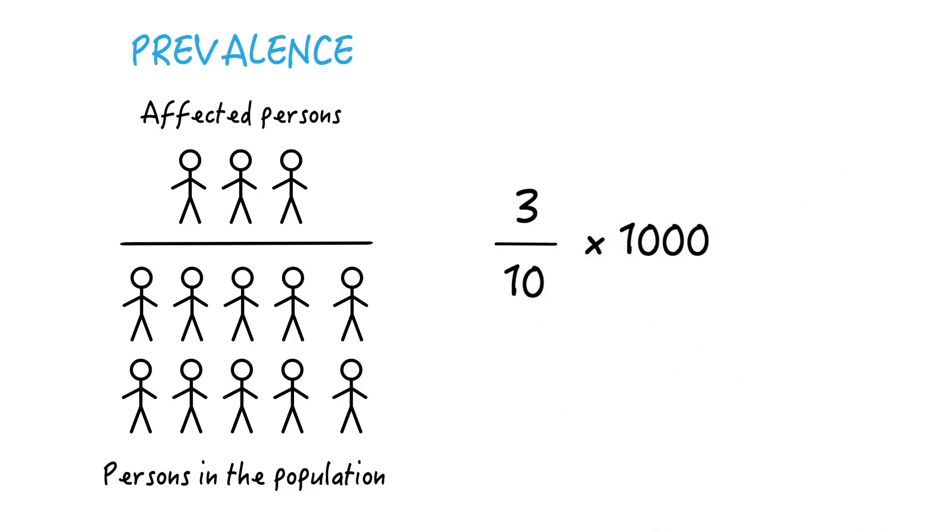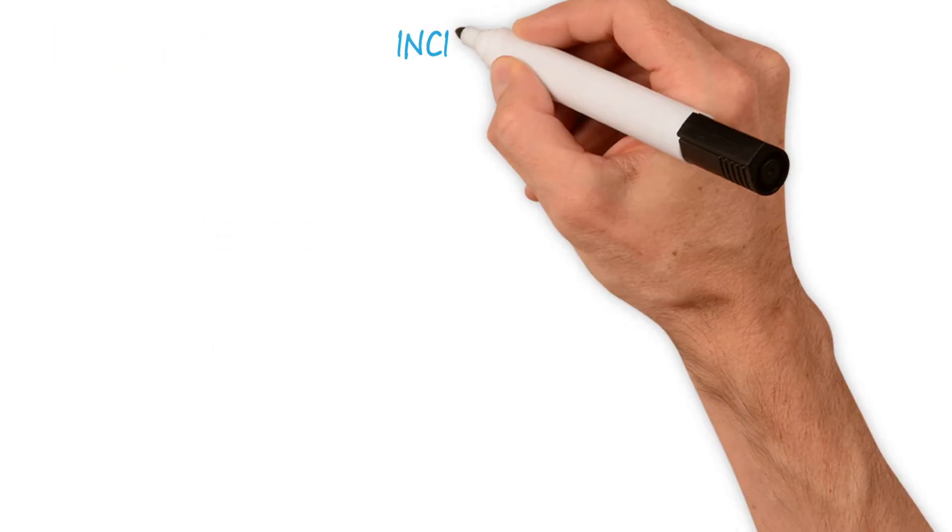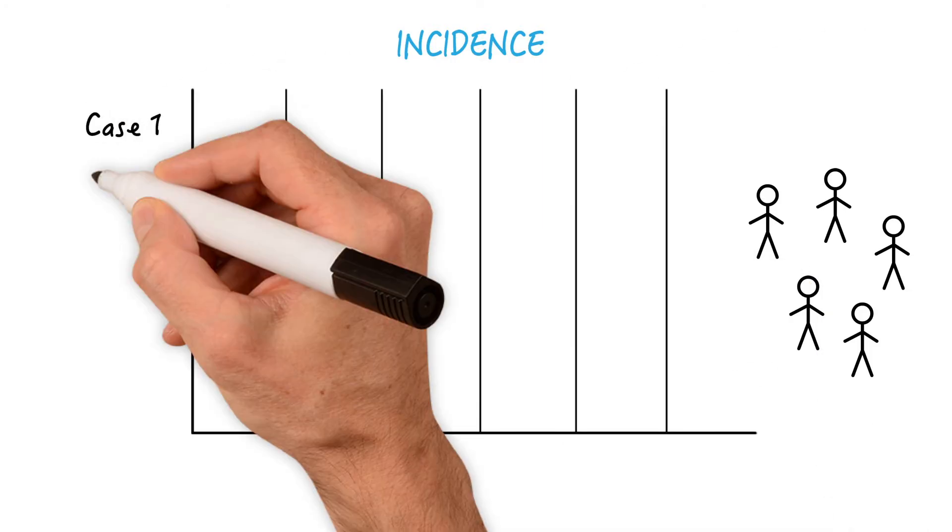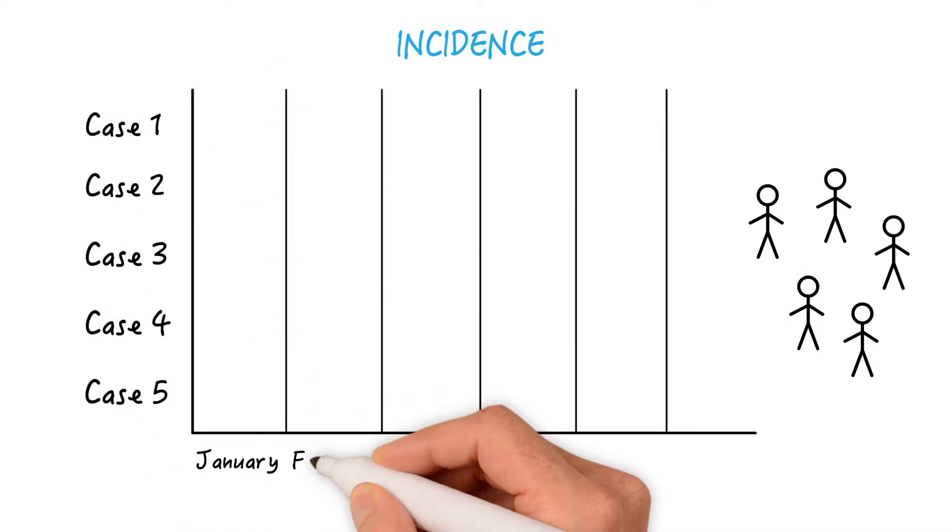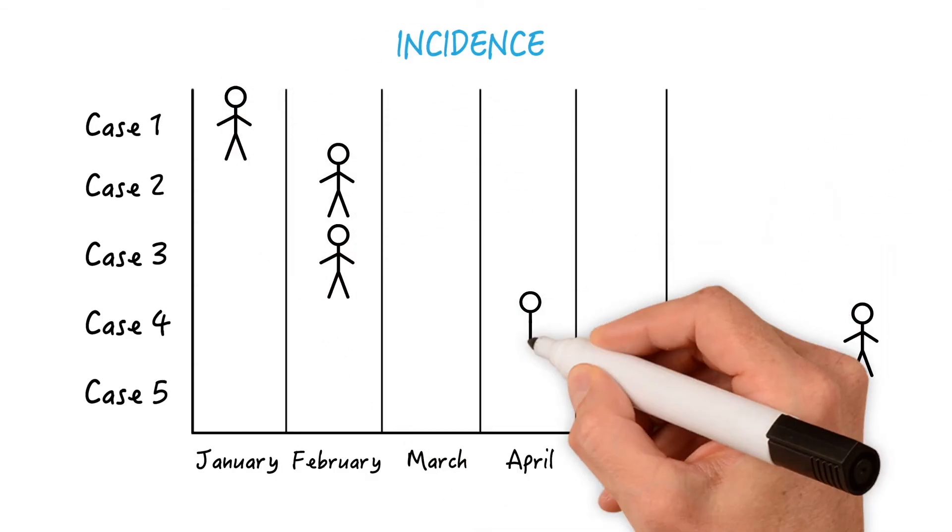which would mean we have a prevalence of 300 per 1000 population. And what's the difference between incidence and prevalence? Let's take a group of five people who developed tuberculosis over a period of six months. One develops the disease in January, two in February, one in April, and one in May.